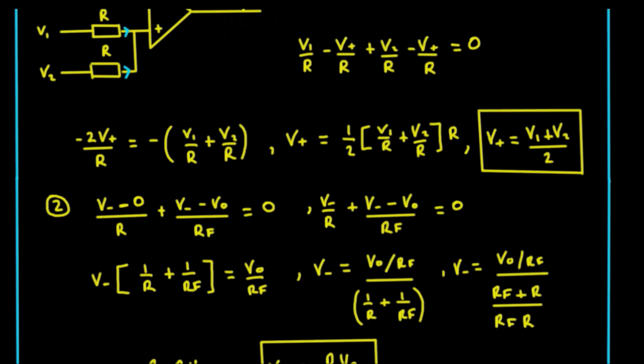So that's v_minus minus zero upon r is the current through that leg there, that's the current in blue, that blue arrow there. If we add on (v_minus - v_out)/rf, then that current plus that current is going to equal zero. Or equally, that current is the negative of that current there.